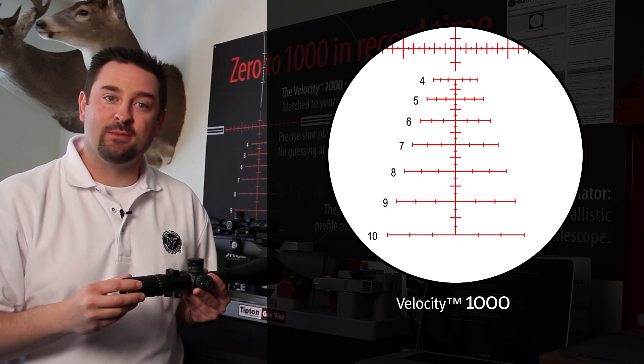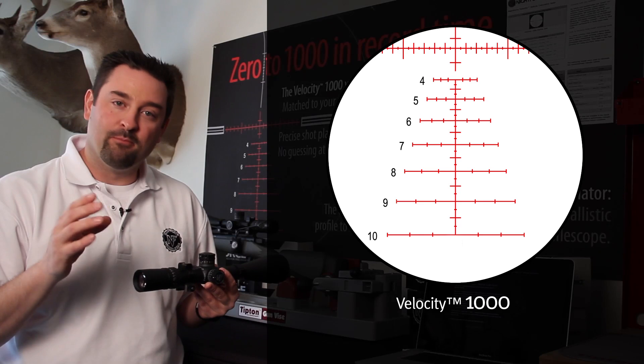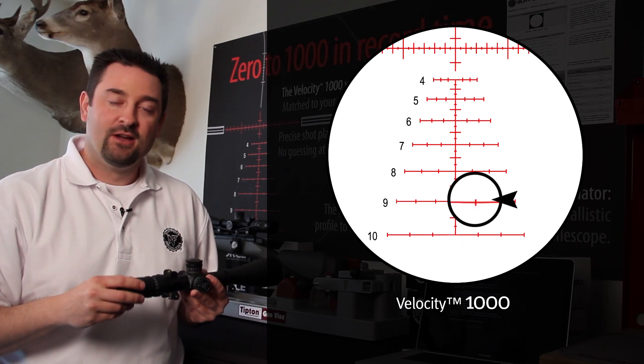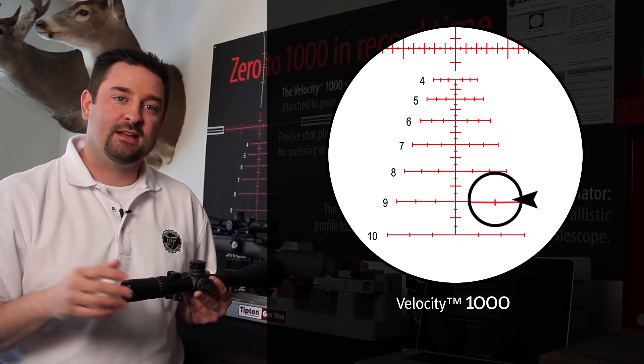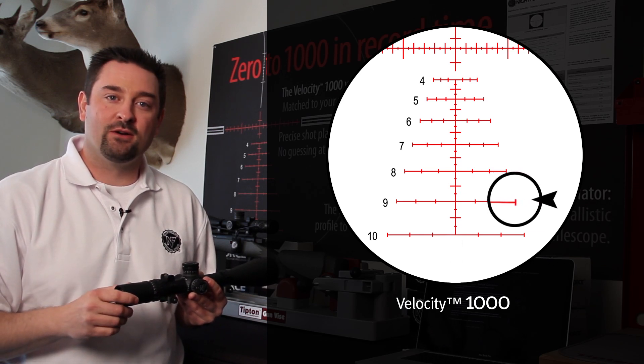Now let's talk a little bit about the windage component. On both the right and the left side of the reticle we have 5, 10, and 15 mile an hour wind holds.